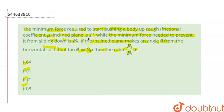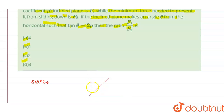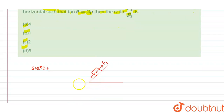The solution: first, we draw the inclined plane. Let us suppose this is our inclined plane and this is our body. In one direction we have force f1, and in this direction we have mg sin θ.